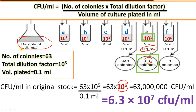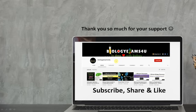To summarize: Step 1 — find the plate with a countable number of colonies between 30 to 300. Step 2 — find the total dilution factor. Step 3 — consider the volume of culture plated (0.1 ml) and substitute the values into the equation. Hope you are clear. If you find this video useful, please consider subscribing to our channel. Thank you so much for your support.